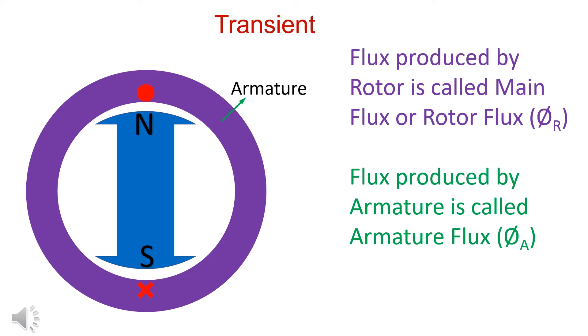Let us understand various types of flux in synchronous generator. Flux produced by rotor field winding is called rotor flux. Flux produced by induced current in armature winding is called armature flux.